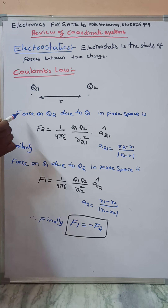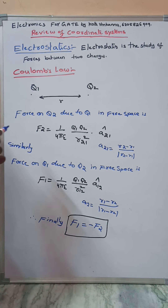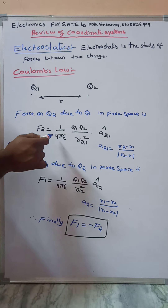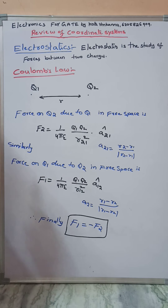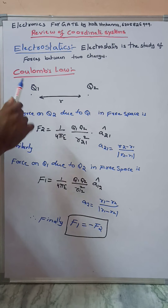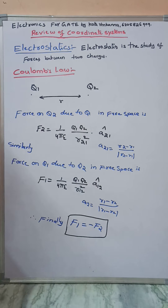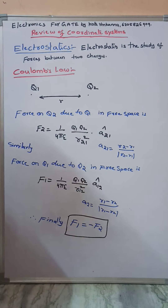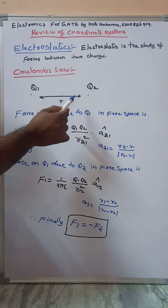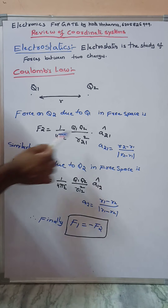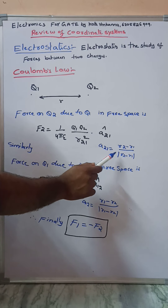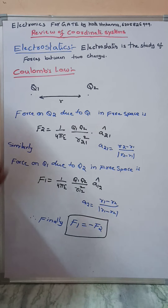The force on Q2 due to Q1 in free space is denoted F2. F2 equals 1 over 4 pi epsilon times Q1 Q2 divided by R21 squared, times A21. A21 is the unit vector from Q1 to Q2, written as R2 minus R1 divided by the modulus of R2 minus R1.